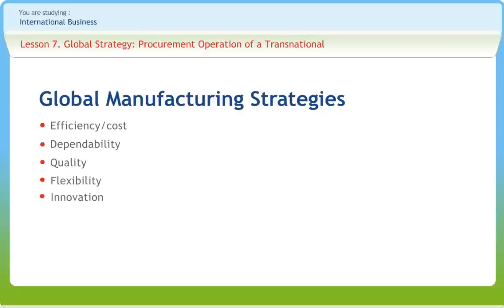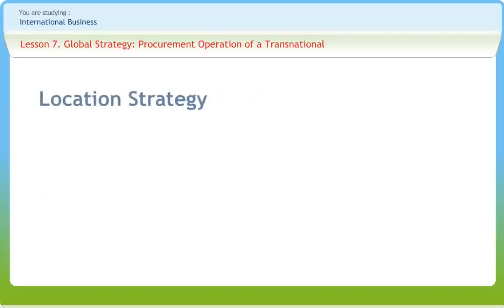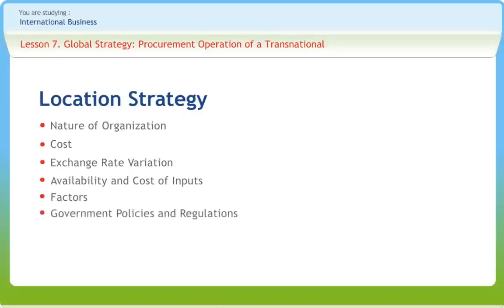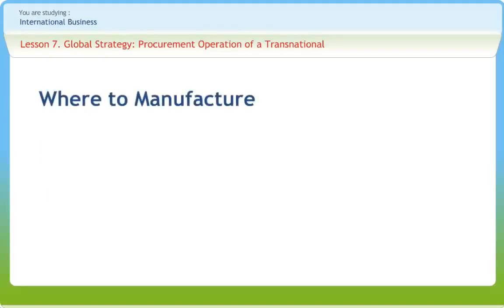Innovation includes the ability to develop new products and ideas. The location of production facilities of a global corporation may be influenced by factors such as nature of organization, cost of operation, exchange rate variation, availability and cost of inputs, government policies and regulations, and social and political factors. For the firm contemplating international production, factors must be considered under three broad headings: country factors, technological factors, and product factors.